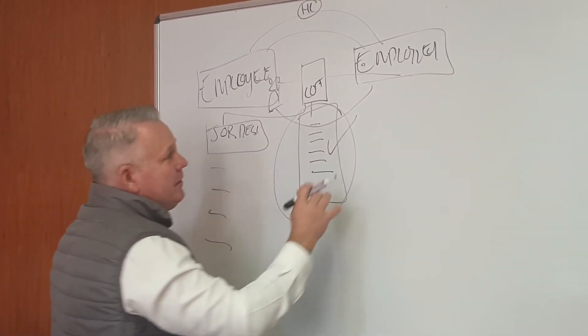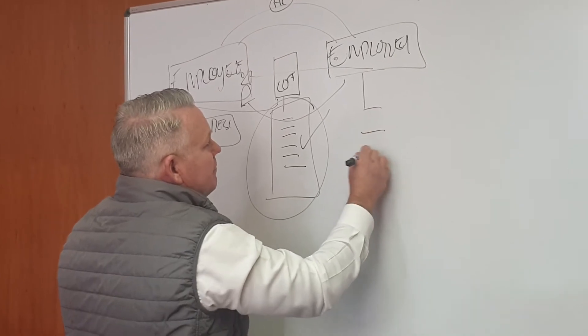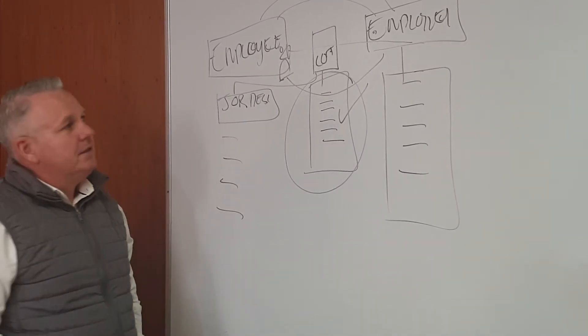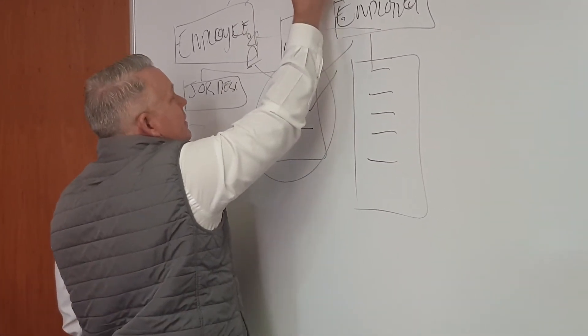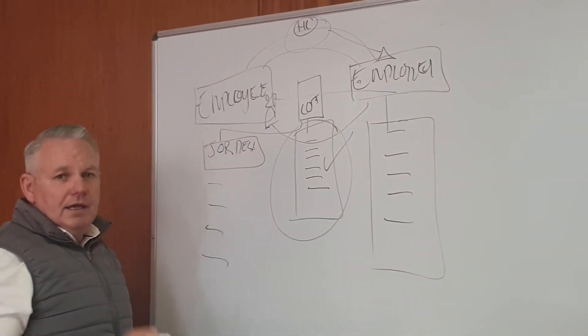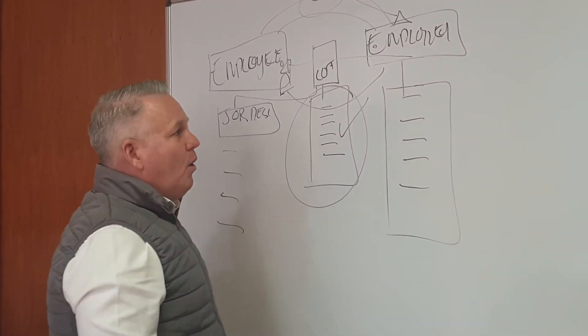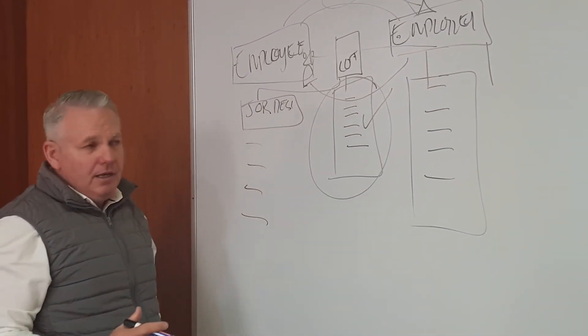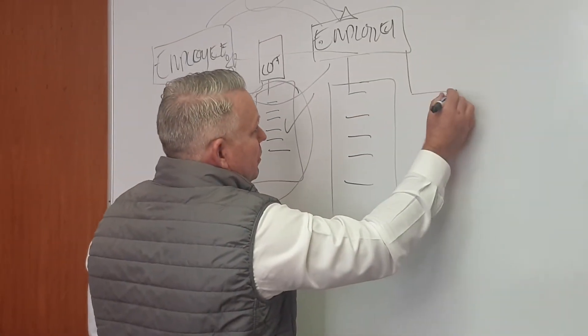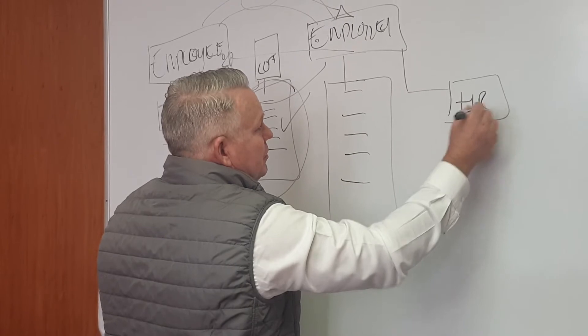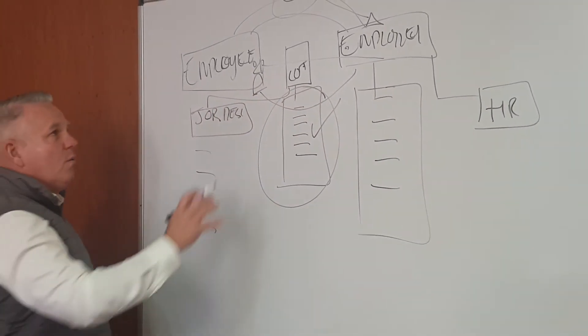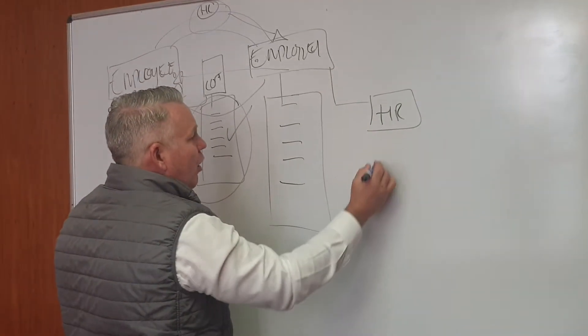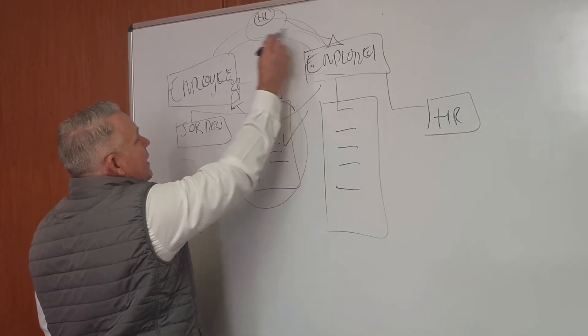Now what often happens in the business environment, particularly when it comes to smaller companies, is this function is fulfilled by the employer, a family member, or someone in the employer's employment who is not an HR manager but just a manager. So what happens is that person is put on the sideline to fulfill the HR function without really understanding what it entails. That means this person or the employer is taking a lot of time to maintain this bridge.